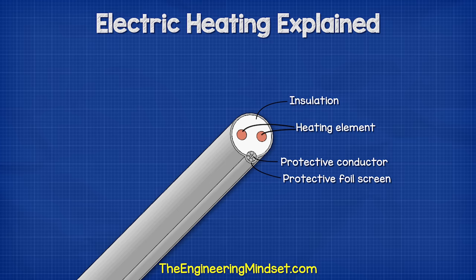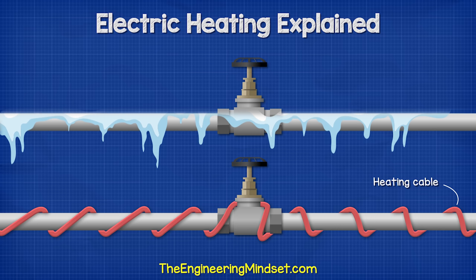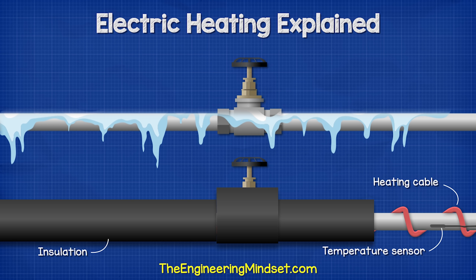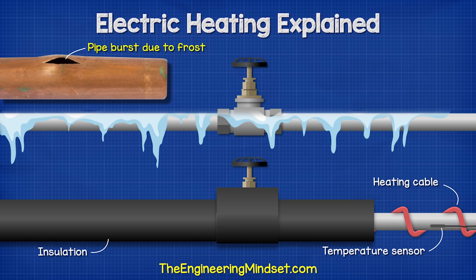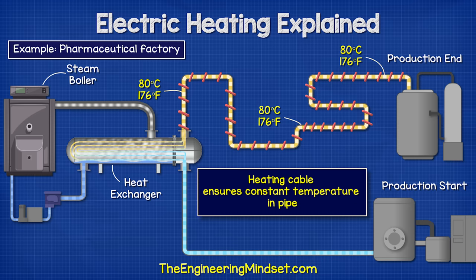We also find electric heating cables used for frost protection, typically along an external pipe which has the risk of freezing. The cable is installed along the pipe and fittings and is usually then insulated. Temperature sensors and thermostats will then monitor the pipes and ensure the fluid within the pipe stays above the freezing point, as this will otherwise damage the pipes. We can also use heating cables to ensure a fluid in a pipe remains at a certain temperature as it travels between various production points, for example food production or pharmaceuticals.